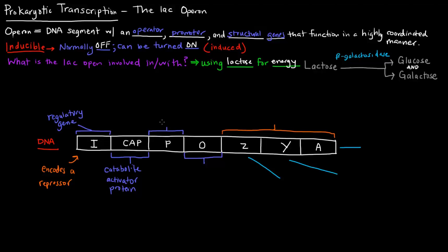This 'P' here stands for the promoter. Why is a promoter sequence important? Promoter sequences bind RNA polymerase. So if this gene is going to be transcribed, RNA polymerase will bind here at the promoter. This 'O' here stands for operator, which we mentioned just a moment ago.